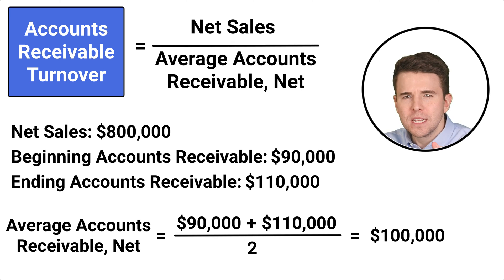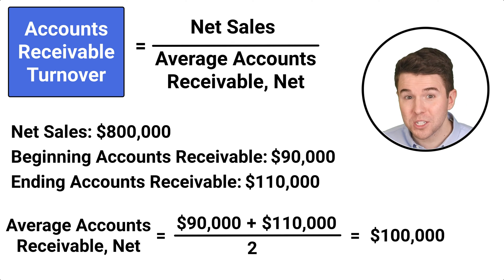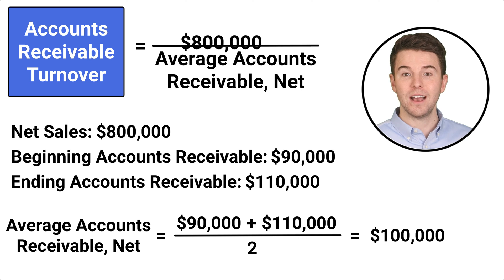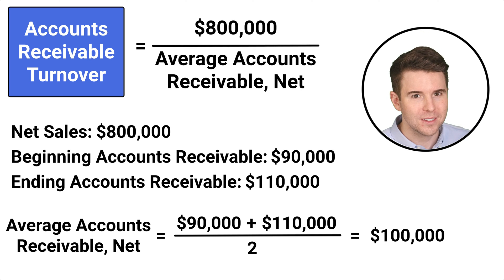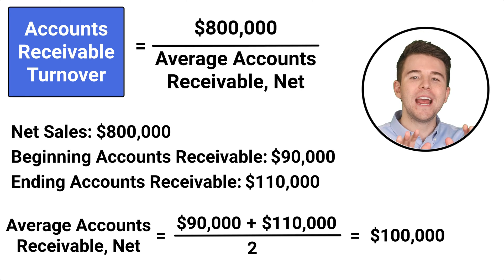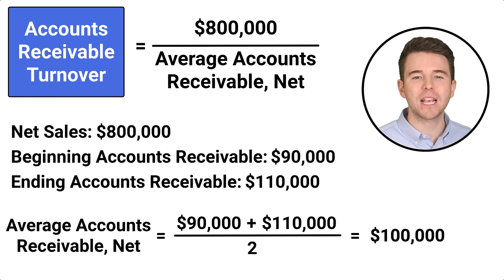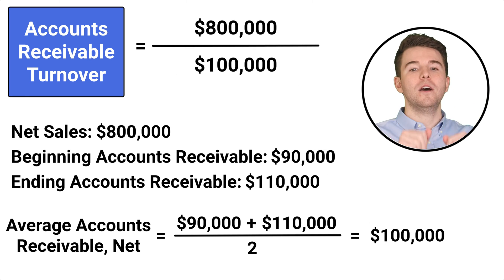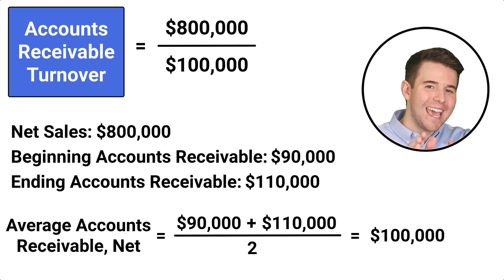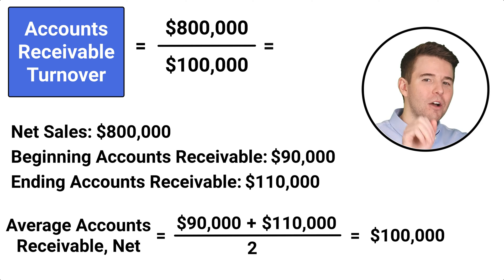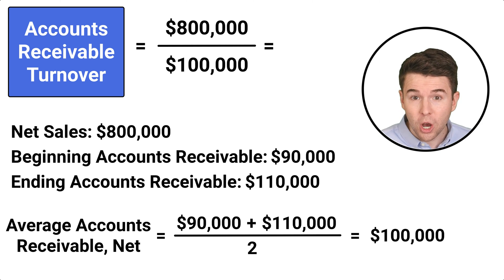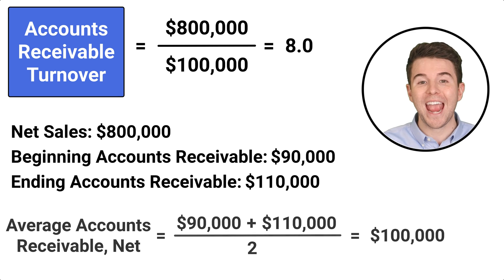Now to compute accounts receivable turnover, we take net sales of $800,000 and divide it by average accounts receivable of $100,000 to get an accounts receivable turnover ratio of eight.